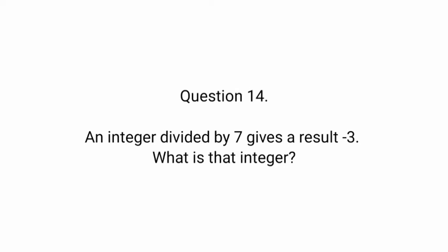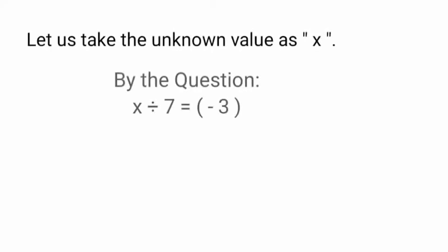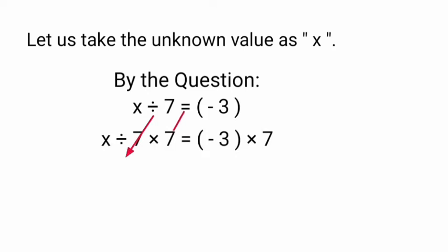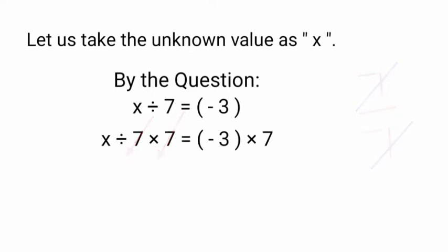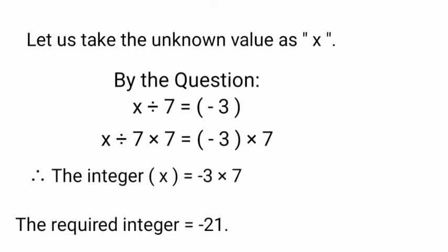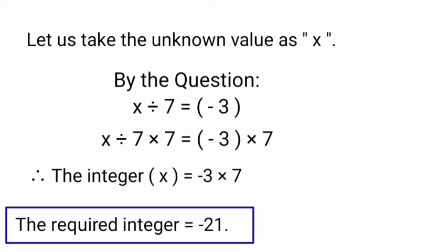Question 14: An integer divided by 7 gives a result of minus 3. What is that integer? Let the unknown value be x. By the given problem, x divided by 7 gives minus 3. To cancel 7 on the left side, multiply by 7 on both sides. 7 divided by 7 equals 1, so x equals minus 3 into 7, which equals minus 21. Hence, minus 21 is the required integer.